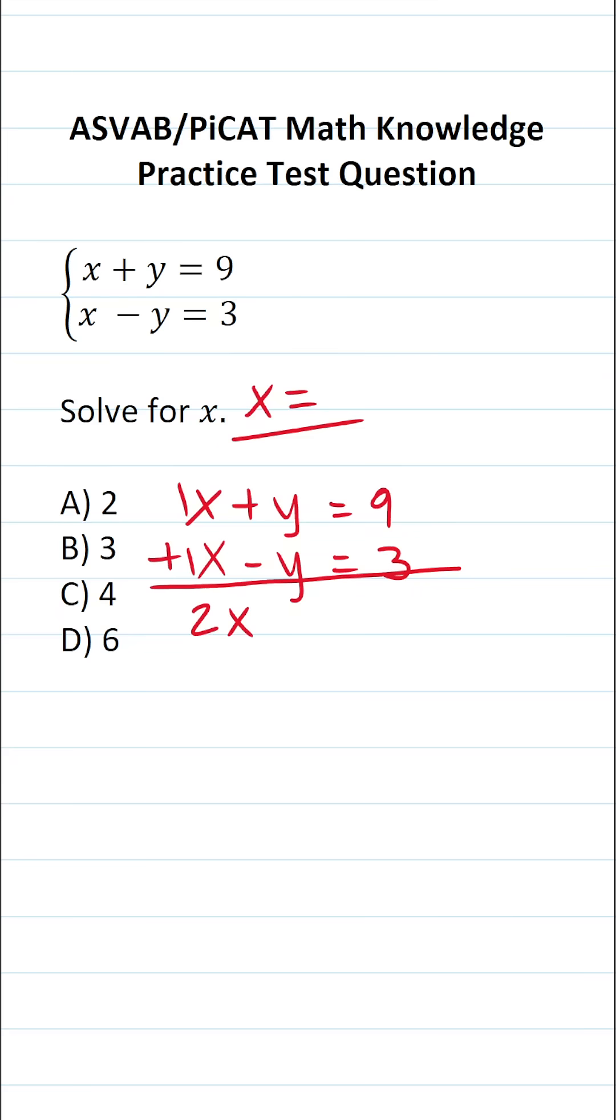What is y plus negative y? Well, that's the same thing as what is 5 plus negative 5. 5 plus negative 5 is 0. So y plus negative y is eliminated.